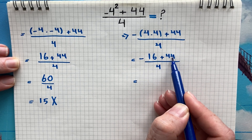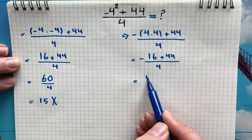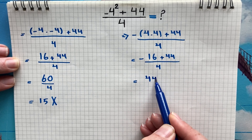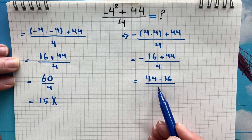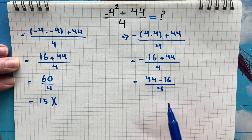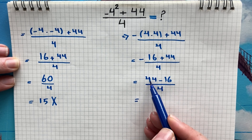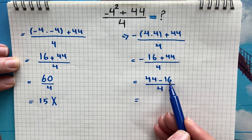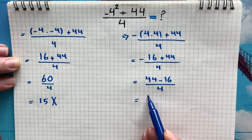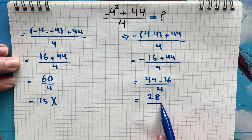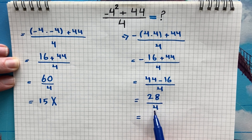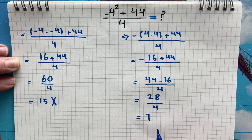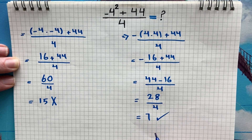Negative 16 plus 44 can be written as 44 minus 16 over 4. And 44 minus 16 is 28 over 4, and 28 over 4 is going to be 7. This is your answer.